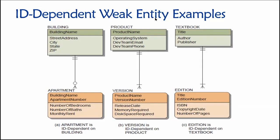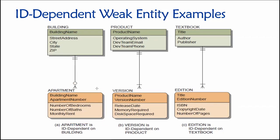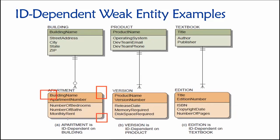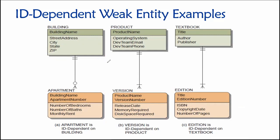Here we see examples of an ID-dependent weak entity on the left. You'll notice that the corners here are sharp — nice sharp 90-degree corners on the rectangles that represent the entities. But down here we have rounded corners. The use of rounded corners in an entity relationship diagram is a visual way of conveying that this is a weak entity.